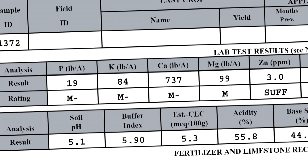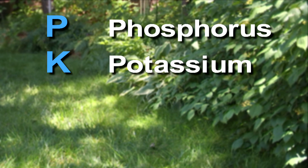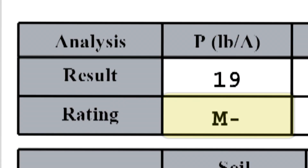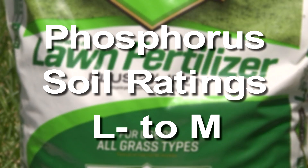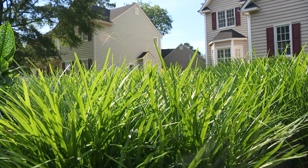The first information we see in the lab test results section is a list of macronutrients present in your soil. This includes phosphorus, potassium, calcium, and magnesium. Each macronutrient is rated on a scale from low minus to very high. In this example, the phosphorus is rated M minus, or medium minus. We can adjust these levels by adding a fertilizer, but we need to pay close attention to the rating. Fertilizers are most effective when added to a soil with a rating of L minus to M, at which level we can see a visual response in plant growth.